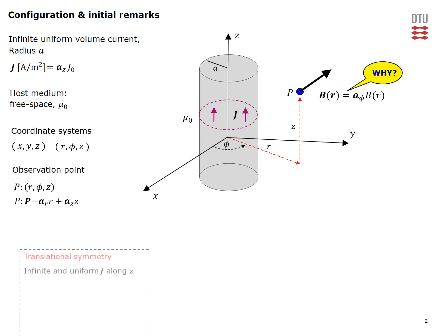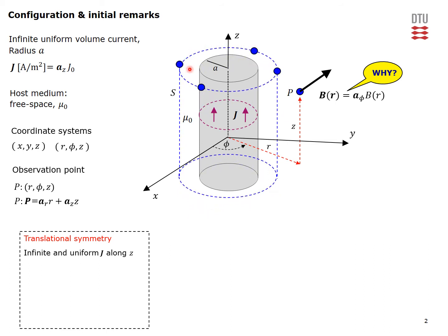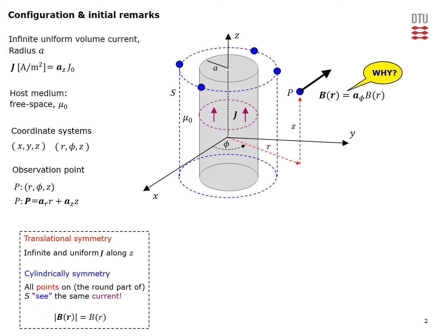Let's argue for this postulate. Since the wire is infinite along the Z direction, this implies translational symmetry and thus independence of the B field on the Z coordinate. Due to cylindrical symmetry, all observation points on a cylindrical surface see the same current, meaning the B field is also independent of the phi coordinate. So the magnitude of the B field is only a function of the radial distance R to the observation point.